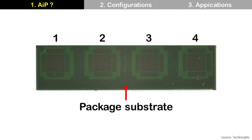Where can we find the antennas? We can see four square patterns at the bottom of the package substrate, and those are the antennas. It means antennas are integrated in the package substrate.